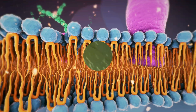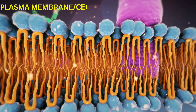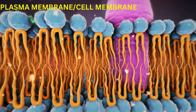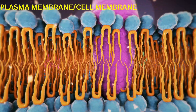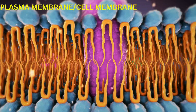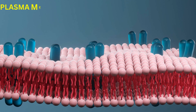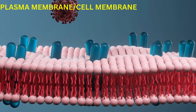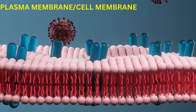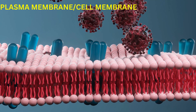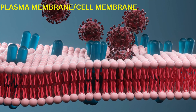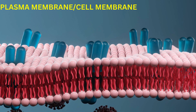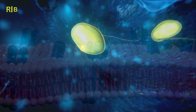Plasma Membrane (Cell Membrane) Function. The plasma membrane is a phospholipid bilayer that surrounds the cell, separating its internal environment from the external environment. It regulates the passage of substances into and out of the cell, maintains cell integrity, and facilitates cell communication and signaling.